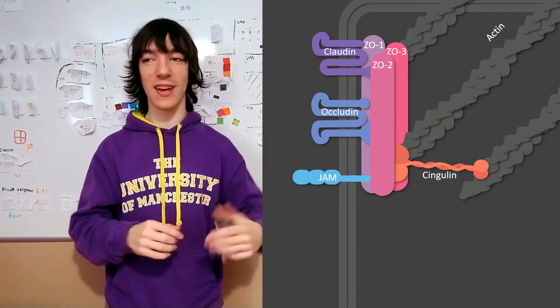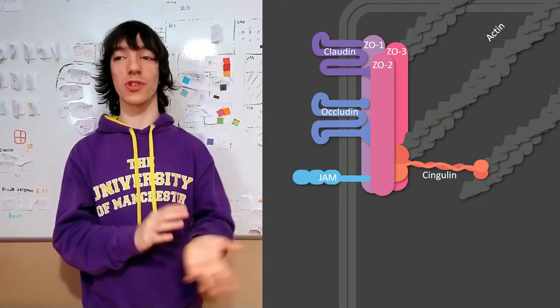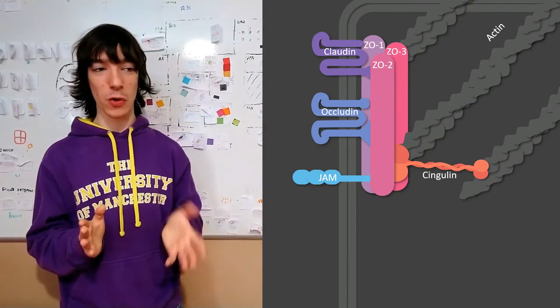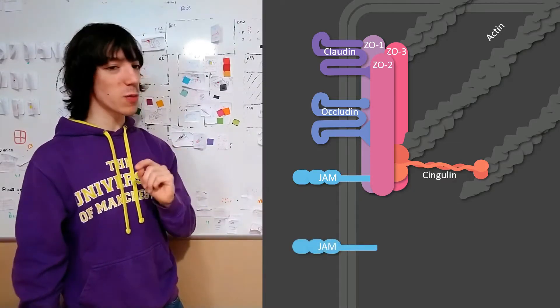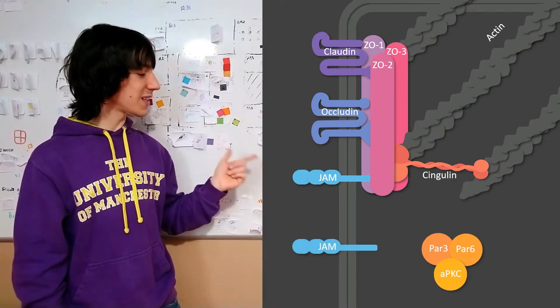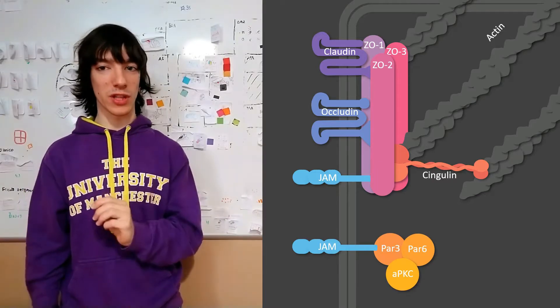You're probably going to come across it in future classes, in other lectures, maybe in developmental biology or something like that. It's the fact that JAM proteins can also recruit the PAR3, PAR6, aPKC protein complex.